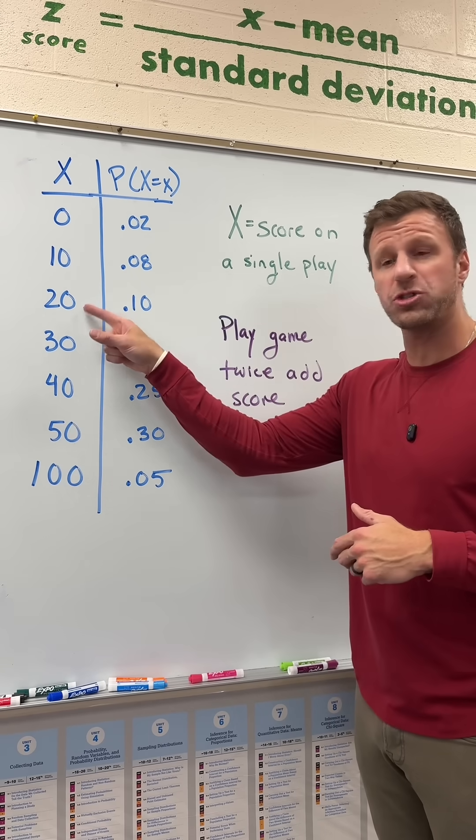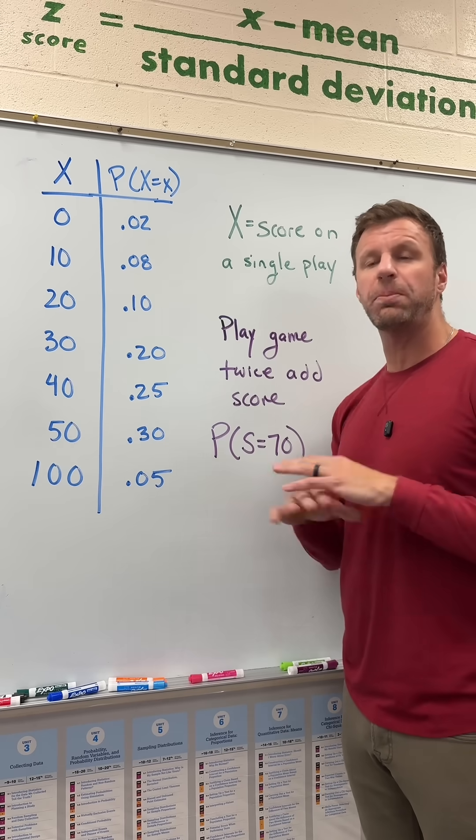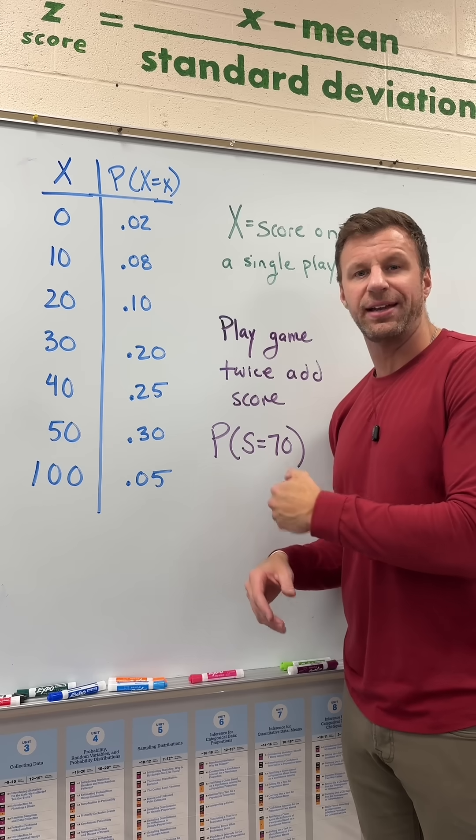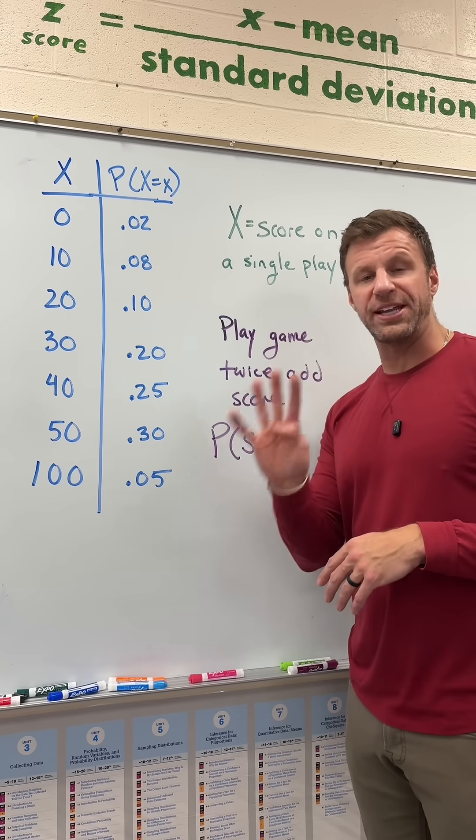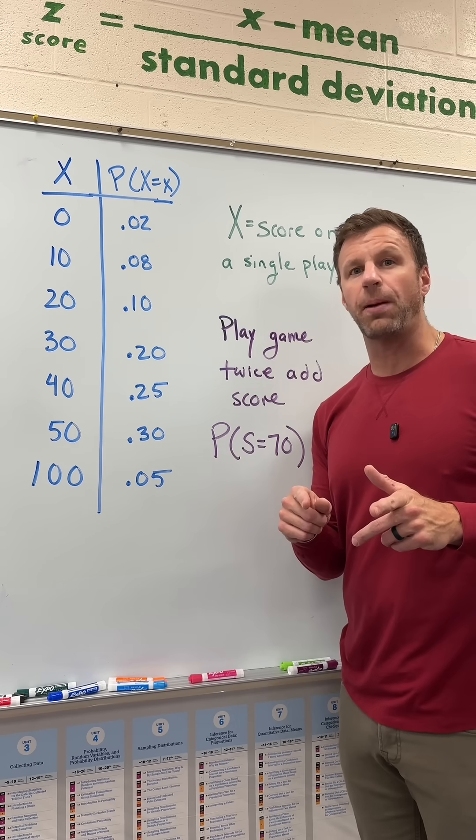We could also get a 20 on the first play and then a 50 on the second play, or we could reverse that for a completely different outcome: 50 on the first, 20 on the second. So now that we understand there are four different outcomes that result in getting a total of 70, let's talk about how to find the probability.